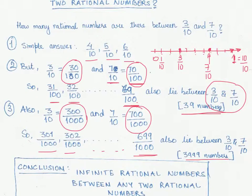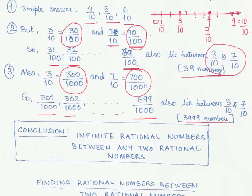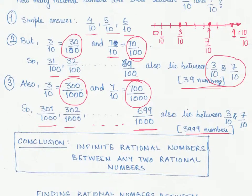So that is the key result to take away from this discussion. Between any two rational numbers there lie infinite rational numbers. Very key result.